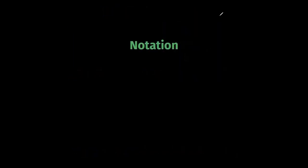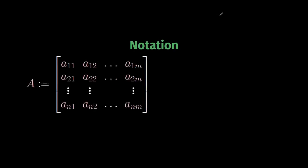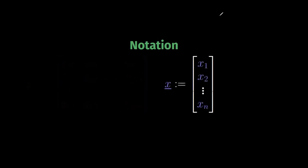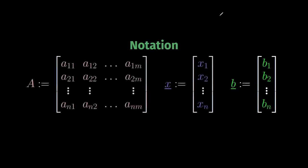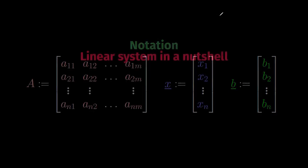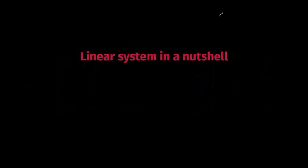Let's summarize. We call A the matrix whose entries are given by the coefficients aij, x the matrix of the m variables, and finally b the matrix of the constant green terms from b1 to bn. Then the equality between matrices can be written as Ax = b, and this from now on will often denote a linear system.